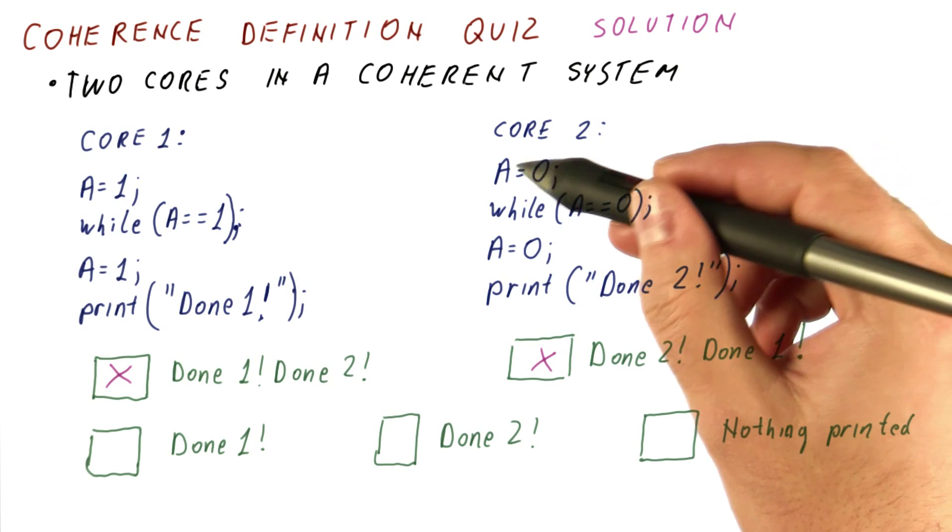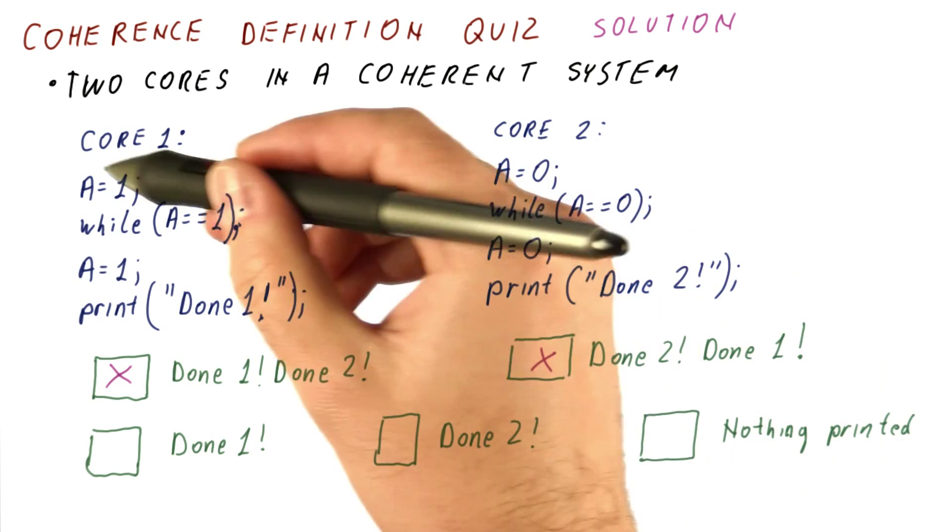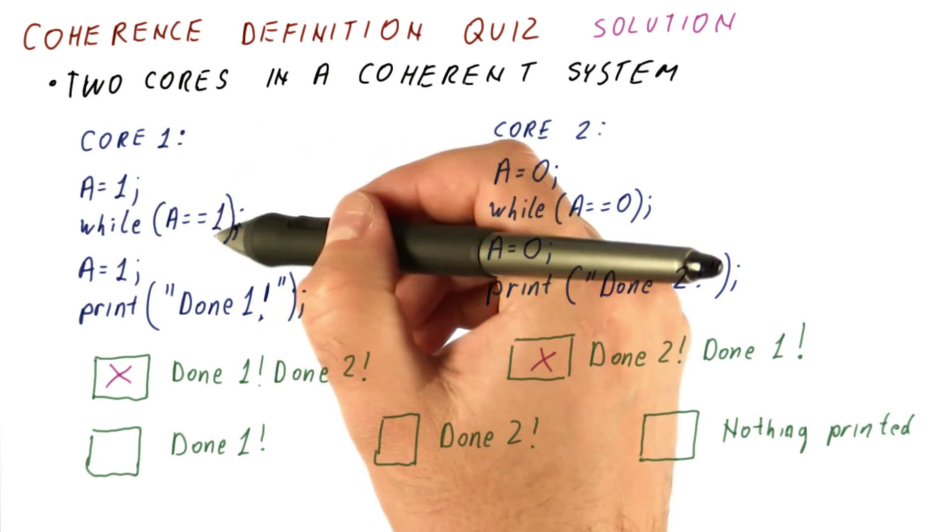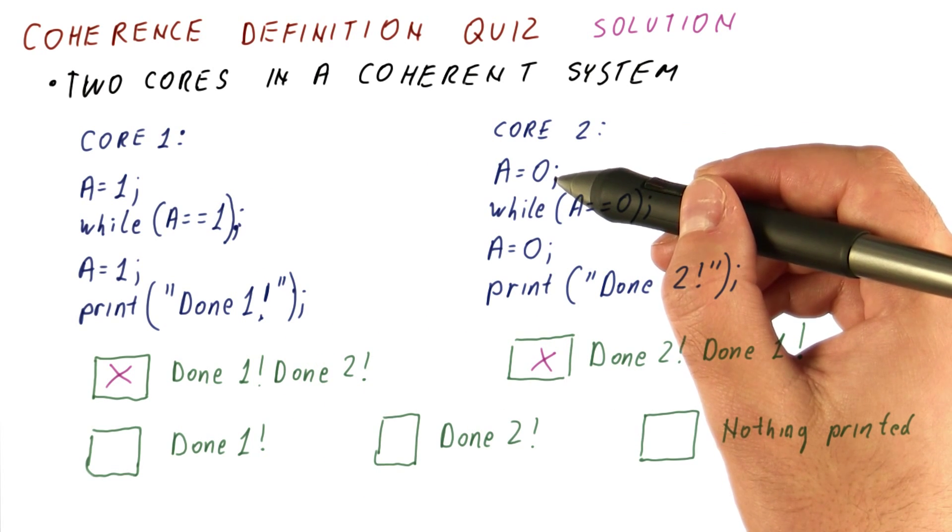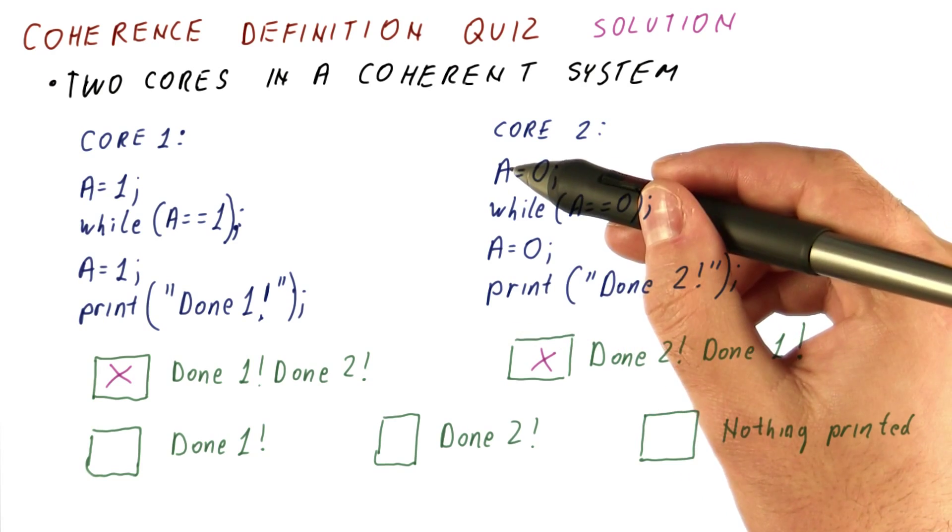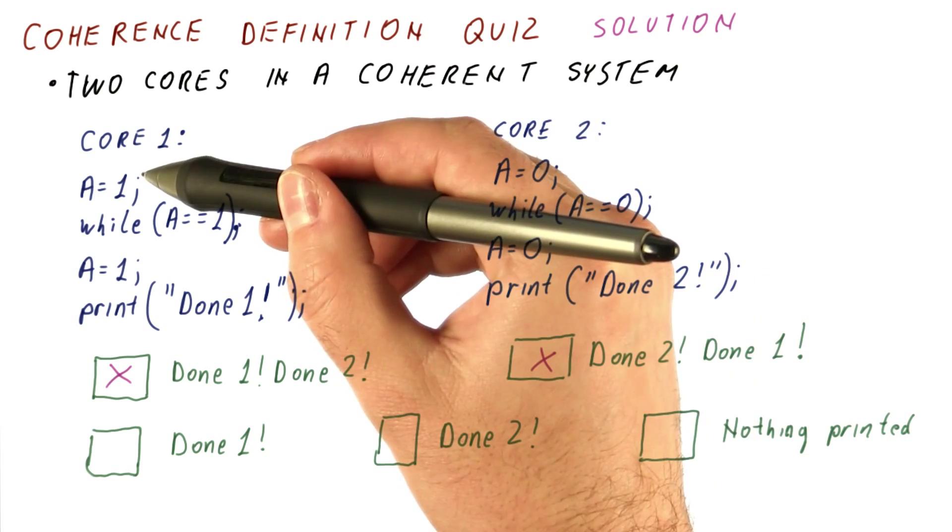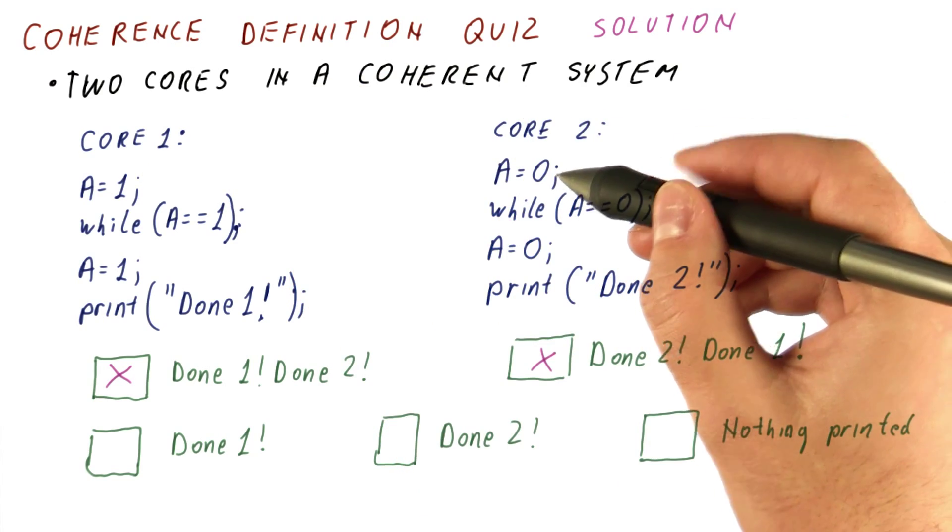Now let's see if it's possible for core two to finish the whole thing before this happens, in which case core one will get stuck here. But that's not possible, because core two now needs to execute this whole program here, before core one even begins.